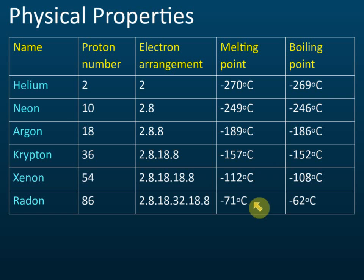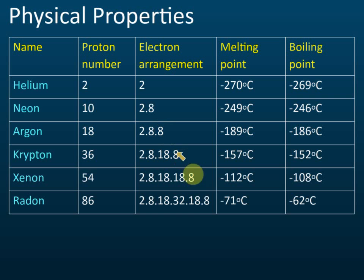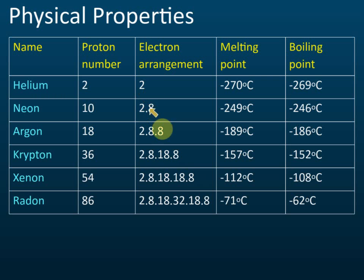Looking at the physical properties table from helium to radon — the proton number and electron arrangement — we can see that all group 18 elements have eight electrons in the last shell, except the first one. Elements with eight electrons in the last shell are very, very stable chemically, meaning they do not react with other elements because the outermost shell is full — two electrons for helium, and eight for the others.